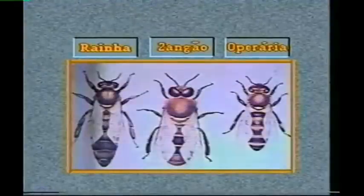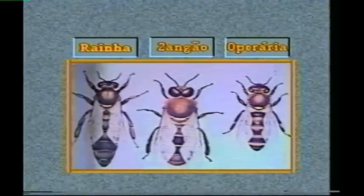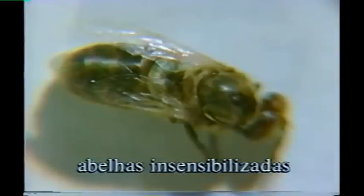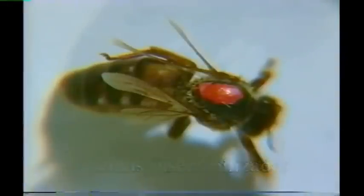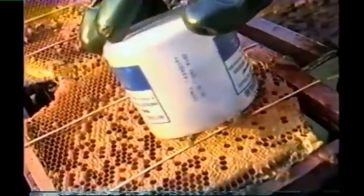Numa colônia de Apis melífera, podemos encontrar entre 60 mil e 80 mil abelhas operárias, uma rainha e até 400 zangões. A rainha e as operárias são indivíduos do sexo feminino. Os zangões são do sexo masculino. A rainha vive em média três anos. Sua função é pôr ovos que, fecundados ou não, eclodem em larvas e dão origem a novas abelhas e zangões em número suficiente para manter a população da colmeia. A rainha emite feromônios característicos, o que lhe permite se comunicar com as operárias e manter a unidade da colmeia, mesmo sem contato visual.